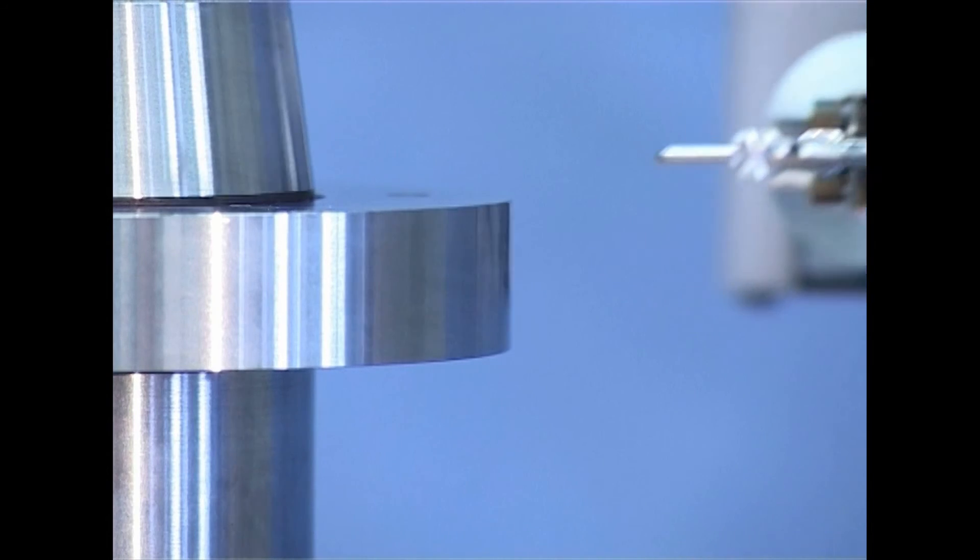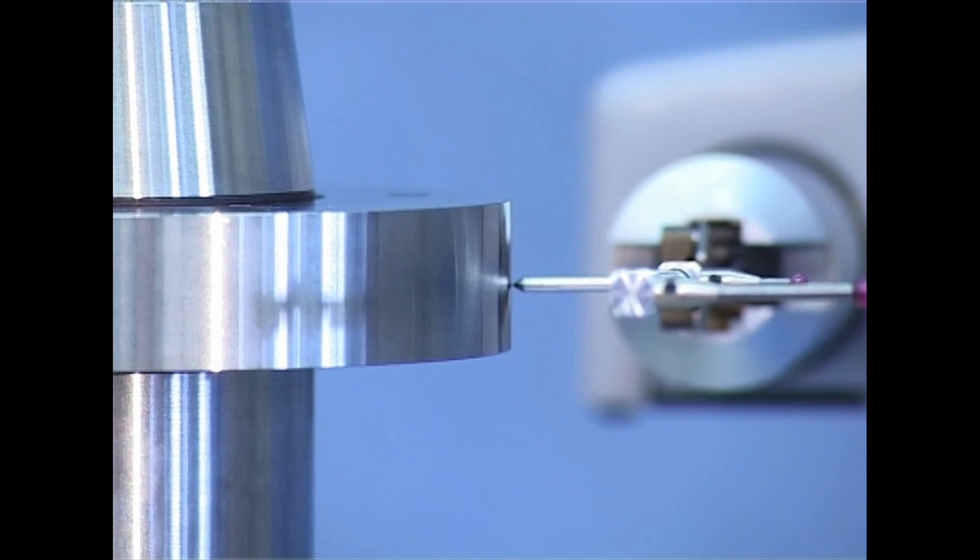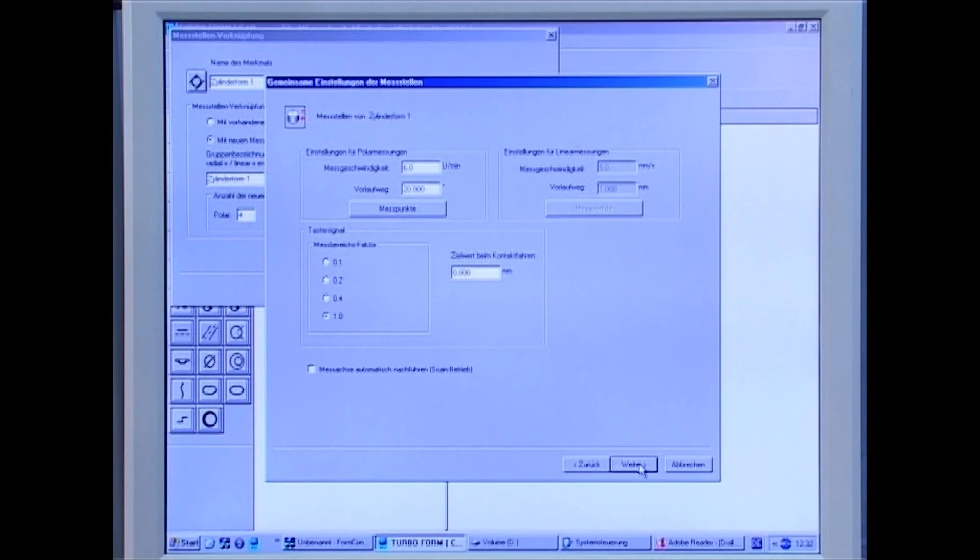The right measurement force is set automatically before every measurement. The number of measuring points can also be set to 100,000 by CNC.